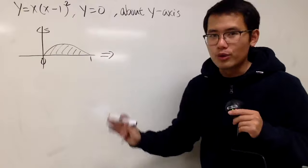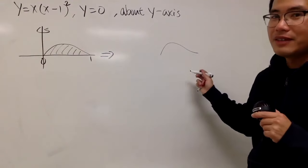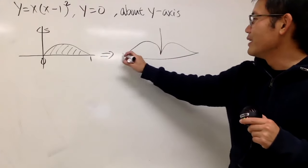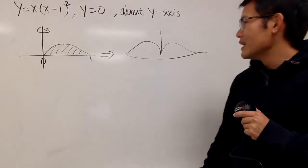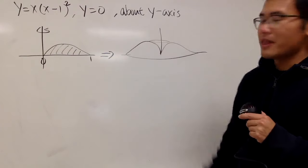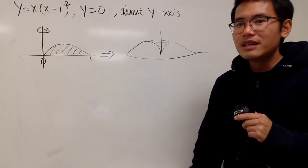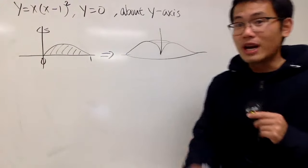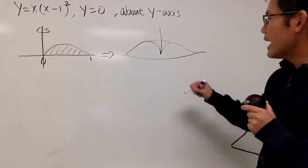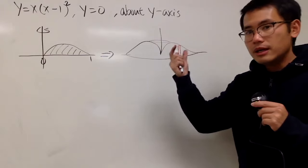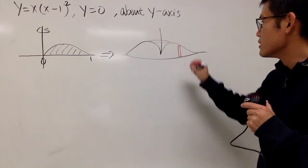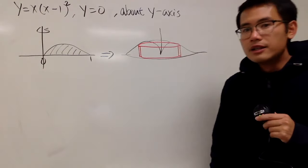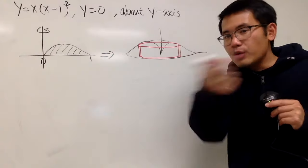So here is the region that we care about, and we are going to rotate this about the y-axis. The picture is going to be horrible but I'll try to draw it anyway. Here is what we have on the left-hand side — do the mirror image. Here is the y-axis and the x-axis. The problem is you cannot really do this without the shell method, because drawing the disk is difficult, and it's also really hard to solve for x in terms of y.